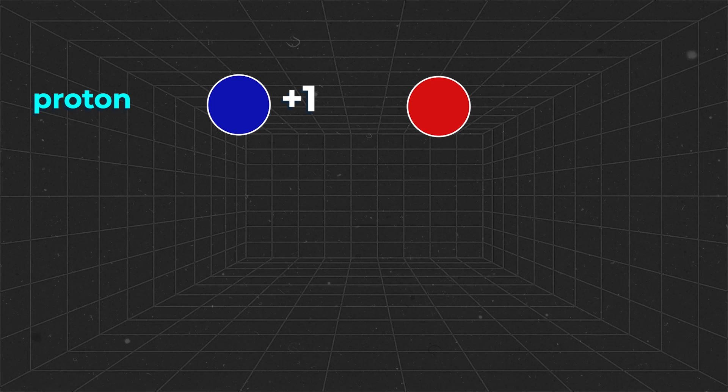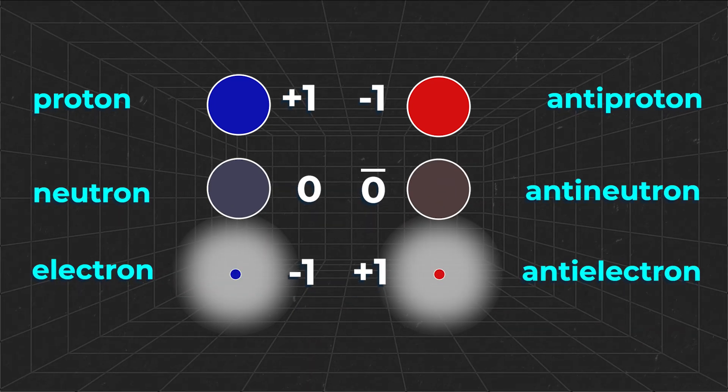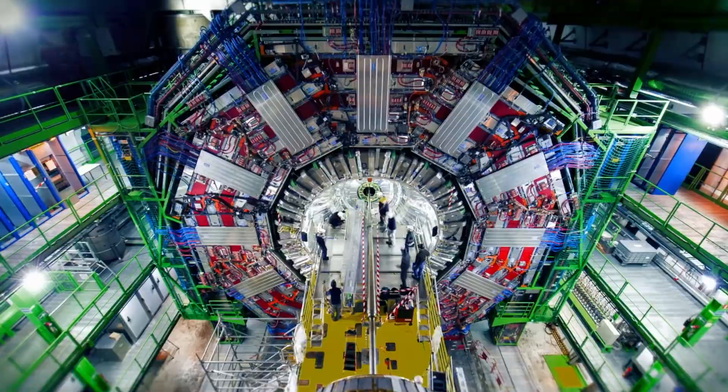For protons, there exists an antiproton, for neutrons the antineutron and for electrons the antielectron, more usually called the positron. We know antimatter exists because we've been able to create it in particle accelerators and study its properties.